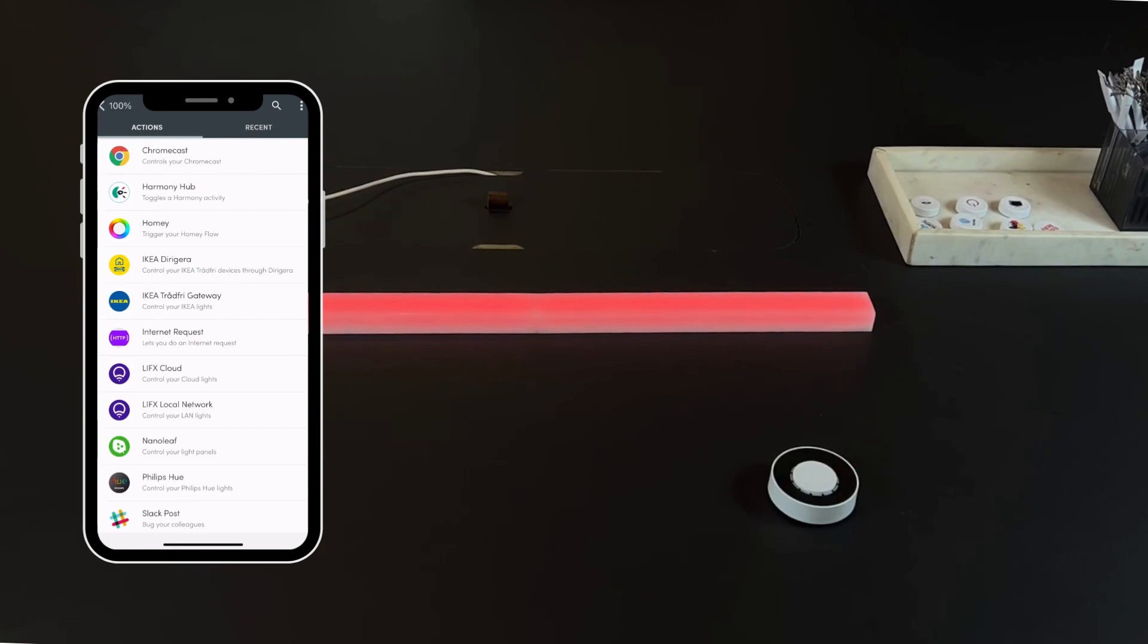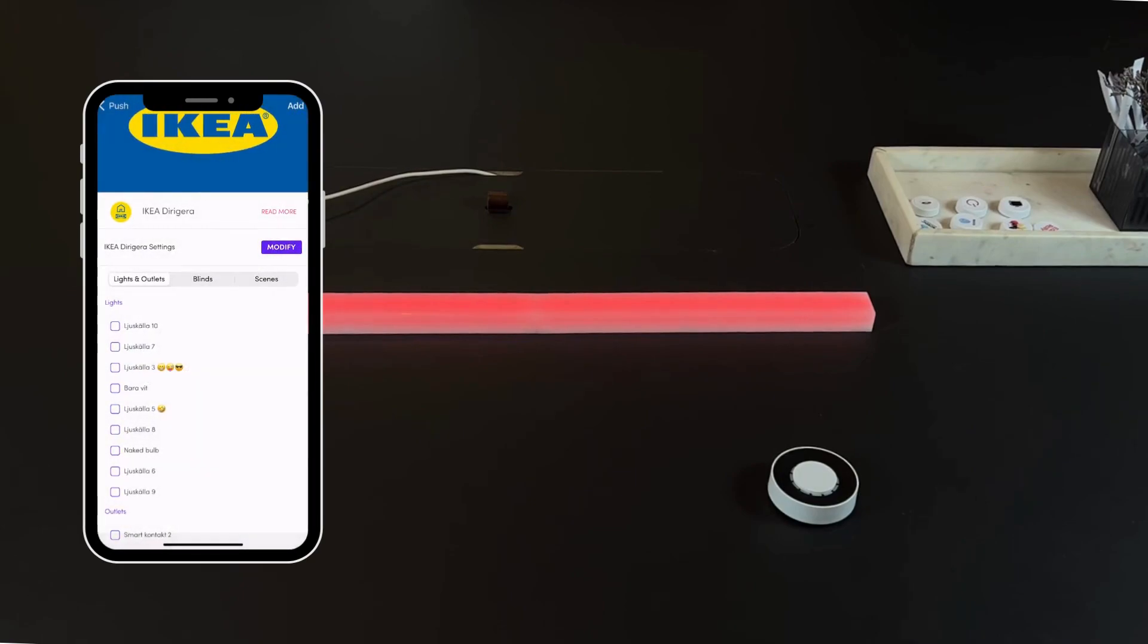You will be presented with a list of our integrations. For example, choose IKEA Dirichuera from the list. Pick the blinds you are already connected to and define the actions you want to be triggered when the flick twist is at the selected point.